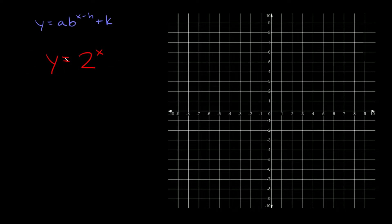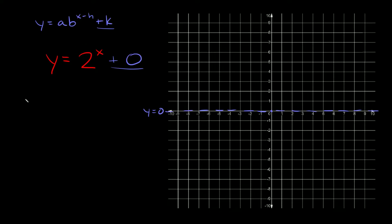Here's the first example: y = 2^x. One of the first things you want to do is graph the asymptote. Looking at the big equation, the asymptote is represented by the number at the end. Since we don't have a number here, we can think of it as plus zero, which tells us our asymptote is at y = 0 — right along the x-axis. So we draw our asymptote right there at y = 0.